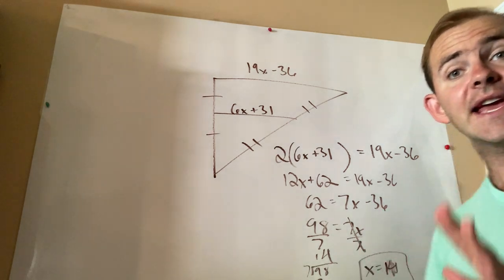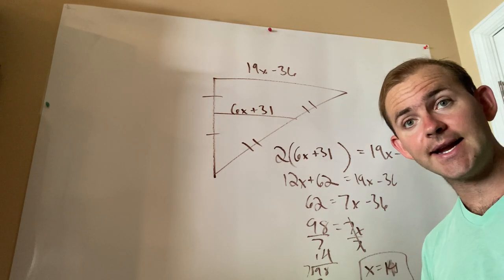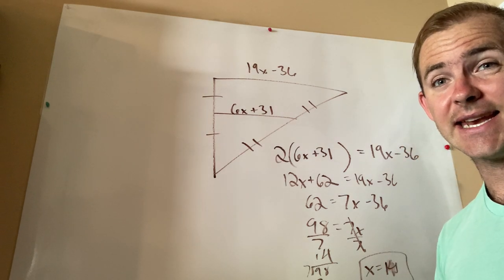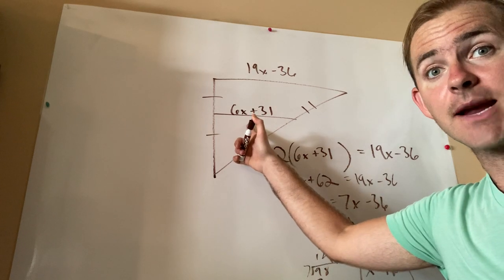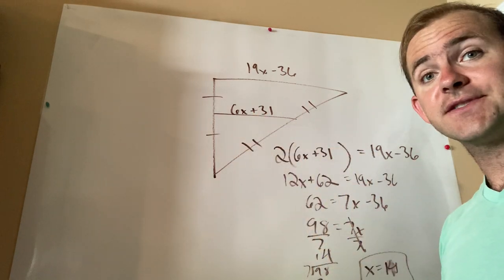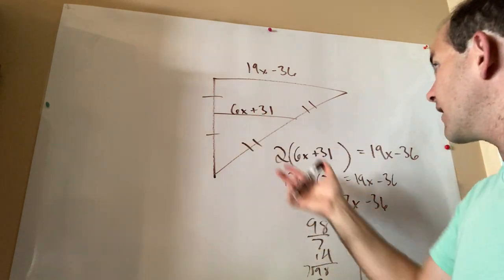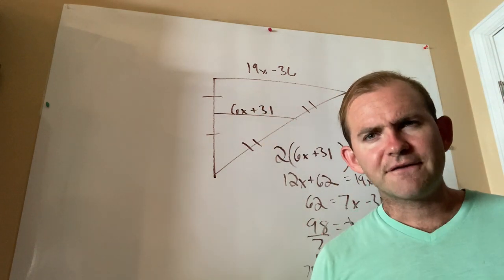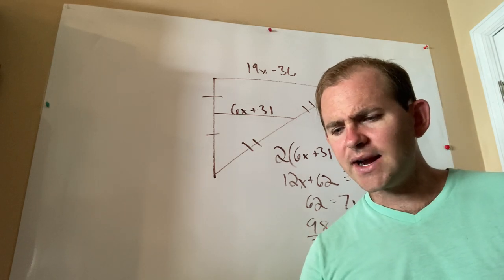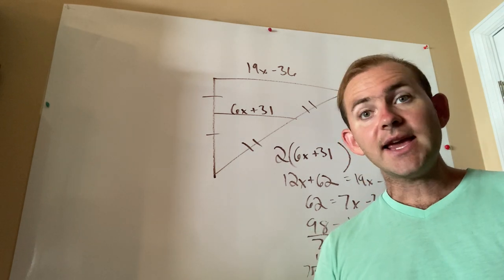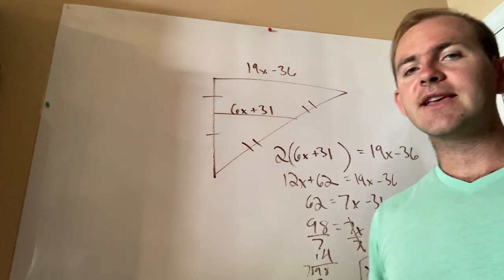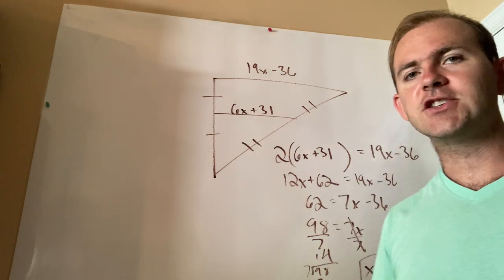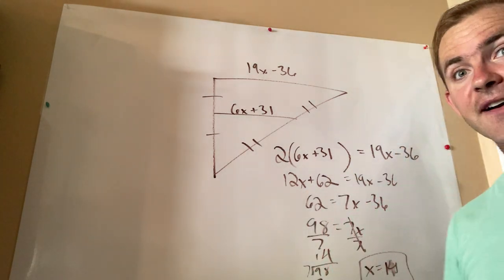Now one variation on this problem, though, could be if instead of just asking us to solve for x, what if instead they asked us to find the length of the mid-segment? All I'd have to do is take my value for x and substitute it back in to find what they're asking me for. So if you guys look at a few more examples here, for example on the next page, page 4, example 7 and example 8, you would do exactly the same way as this problem. The only difference would be that you have to substitute back in to find what they're asking for.